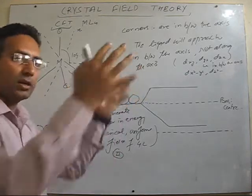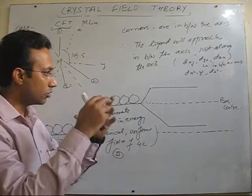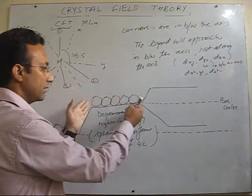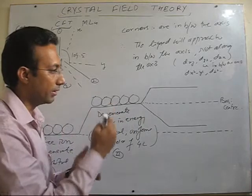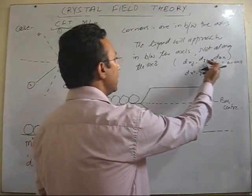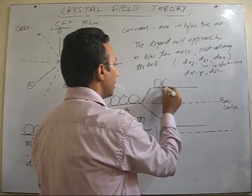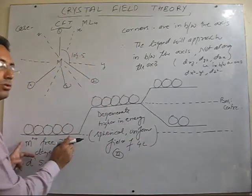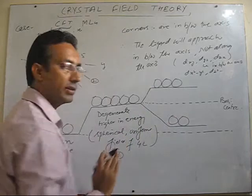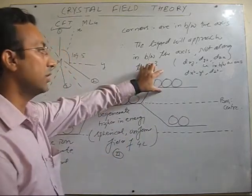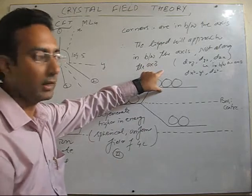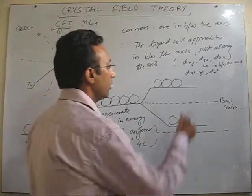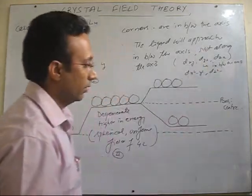So again, the directions are not very clear for the metal, so it will feel a uniform repulsion from all directions — there is energy increase for all the d orbitals, they are still degenerate but with higher energy. Now when the picture is clear, we will see these three (T2) will suffer more repulsion, so these three will be higher in energy and the other two will be less in energy. This is entirely reverse as compared to octahedral fields.